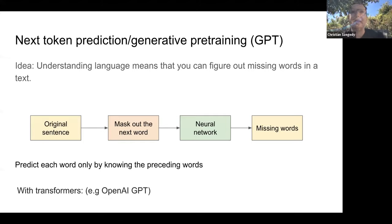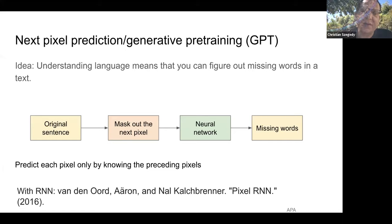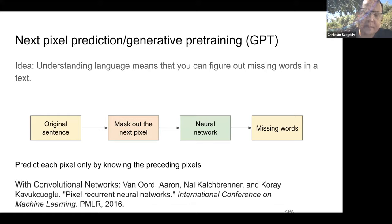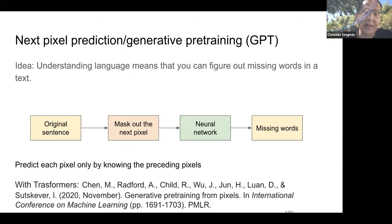Nowadays it gained a lot of popularity because of very high quality language models. OpenAI GPT is accessible, trained on a lot of data, and is a very large model. But it's not just applicable to language — it can be applied to image generation as well. Most people are not really aware, but Pixel RNN and Pixel CNN used to be state of the art for image generation — better than GANs. It's the exact same idea: masking out all present and future pixels and predicting the next pixel in a certain ordering.